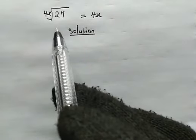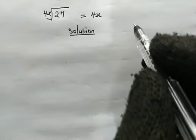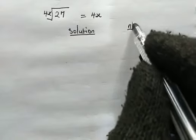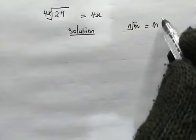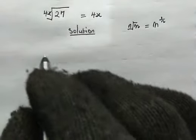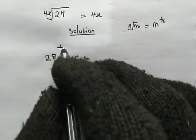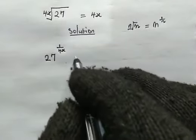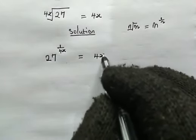Now the left hand side of this equation, we will write it making use of this property. We know the nth root of m, this is equal to m to the power of 1 over n. Now from the left we have 27 to the power of 1 over 4x. Then from the right hand side, this is equal to 4x.